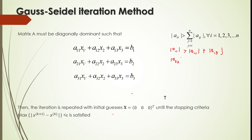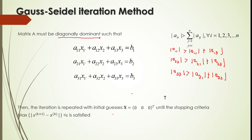The absolute value of a_22 must be greater than the absolute value of a_21 plus |a_23|. And the absolute value of a_33 must be greater than |a_31| plus |a_32|. If this condition is satisfied for all rows, then we say matrix A is diagonally dominant. If A is diagonally dominant, you can solve it using the Gauss-Seidel iterative method.